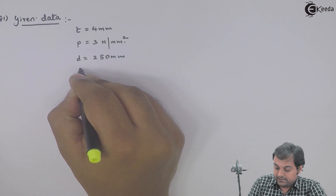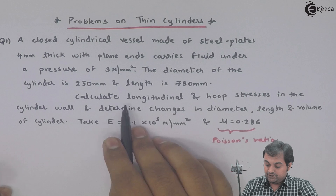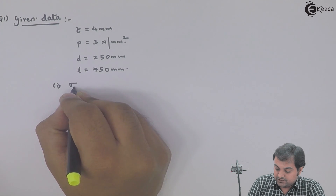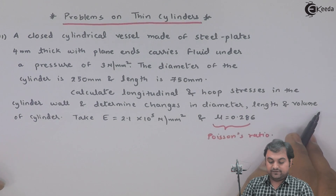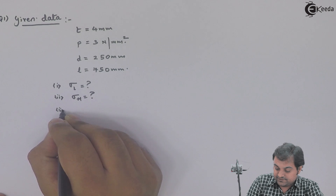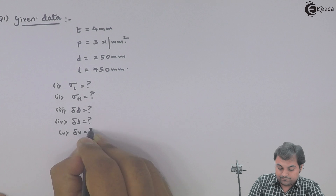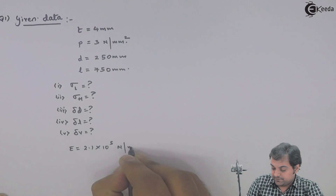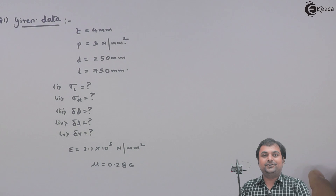Internal diameter d = 250 mm, and length L = 750 mm. We have to calculate: longitudinal stress, hoop stress, change in diameter (Delta D), change in length (Delta L), and change in volume. Young's modulus E = 2.1 × 10⁵ N/mm² and Poisson's ratio mu = 0.286. With this data available, let us find the solution.